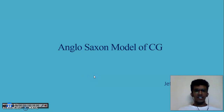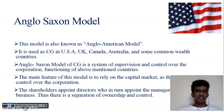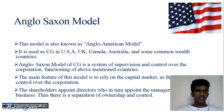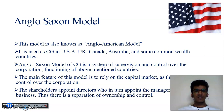Good morning everyone. Today we are going to discuss the Anglo-Saxon model of corporate governance. This model is also known as the Anglo-American model. It is used for corporate governance in the USA, UK, Canada, Australia, and some Commonwealth countries. The Anglo-Saxon model of corporate governance is a system of supervision and control over the corporation functioning of the above-mentioned countries.